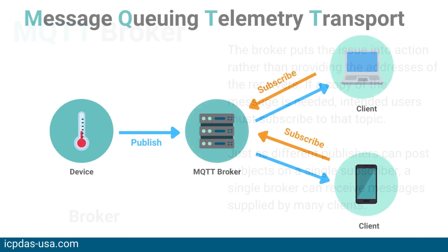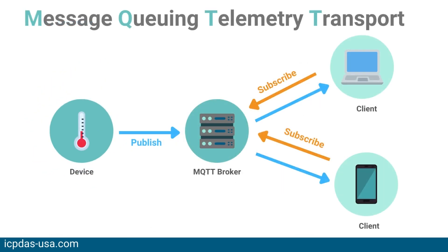A broker can manage up to millions of concurrently connected MQTT clients depending on the implementation. The broker puts the issue into action rather than providing the addresses of the receivers. If a copy of the message is needed, intended users must subscribe to that topic. Just as different publishers can post subjects on a single subscriber, a single broker can receive messages supplied by many clients.